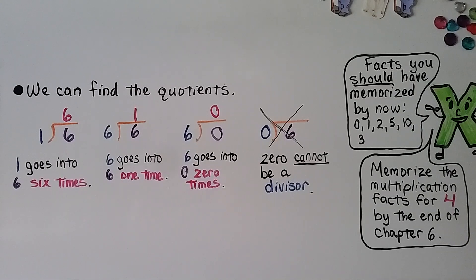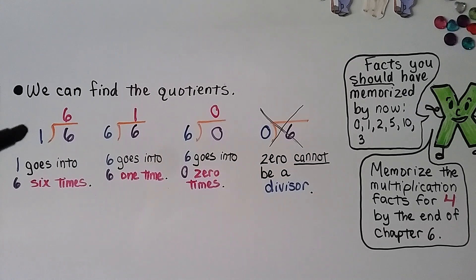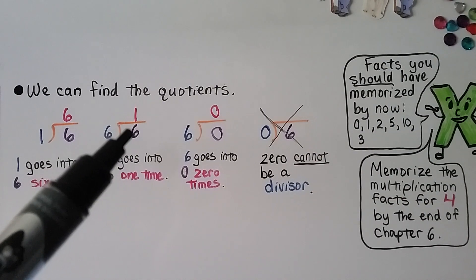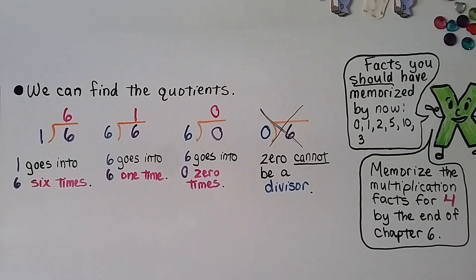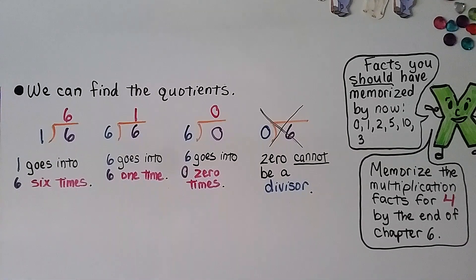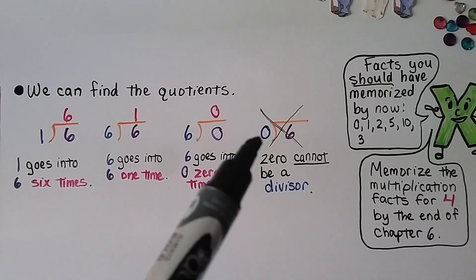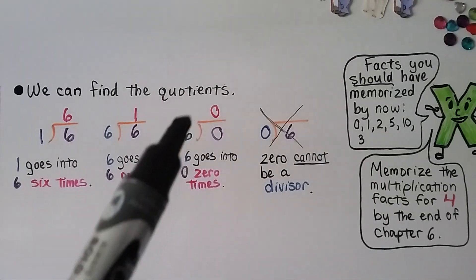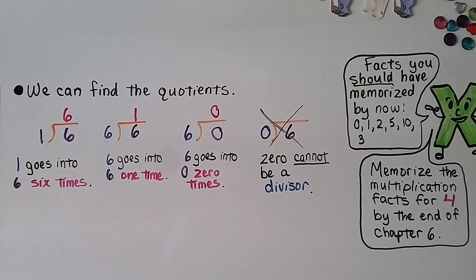We can find the quotients. Remember, a division problem can be written with this division bracket. 1 goes into 6 — it goes into 6 six times. Here, 6 goes into 6 — 6 goes into 6 one time. Here, 6 goes into 0 zero times. And remember, 0 cannot be a divisor, so we can't do this one. It can be the quotient and it can be the dividend, but it can't be the divisor.